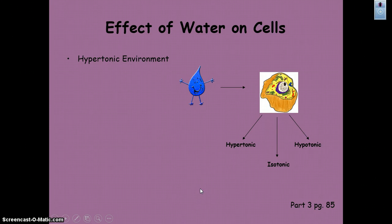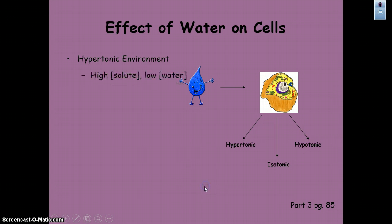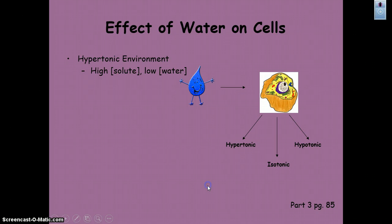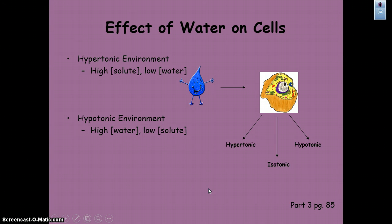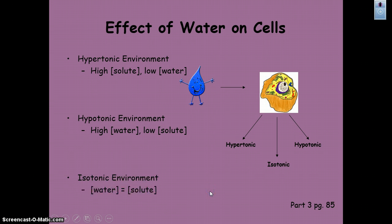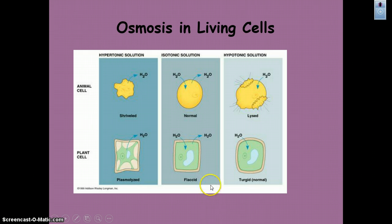The effect of water on cells: hypertonic, hypotonic, and isotonic solutions. A hypertonic environment has high solute and low water. Hypotonic is high water and low solute. Isotonic means equal amounts of water and equal amounts of solute.